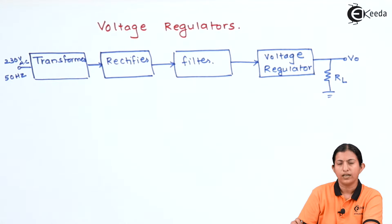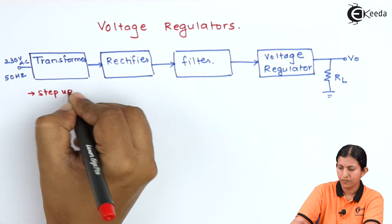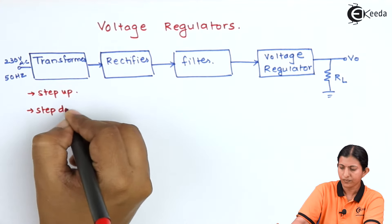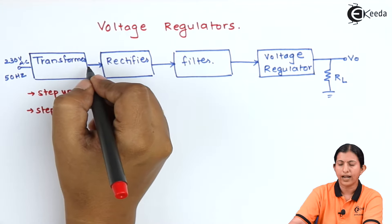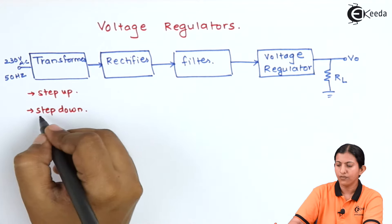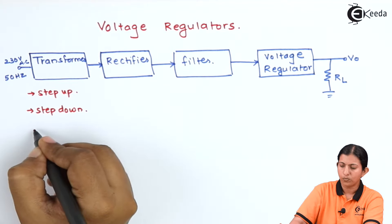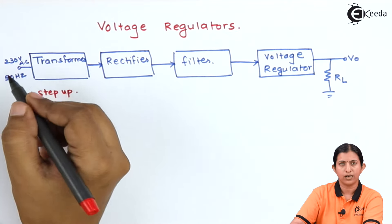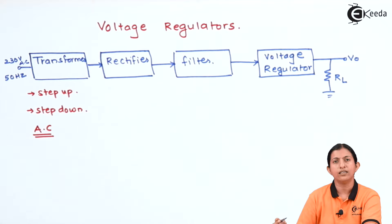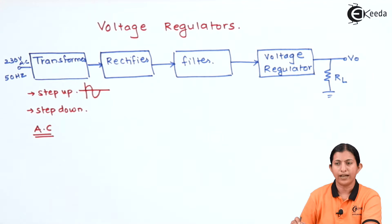This transformer can be a step-up transformer or a step-down transformer. In a transformer, there are two types: step-up and step-down. If we use a step-up transformer, the output voltage is more than the input voltage. If we use a step-down transformer, the output voltage is less than the input voltage. Here we get the output as an AC signal, which can be either increased or decreased relative to the input signal. Then that AC signal is applied to the rectifier.